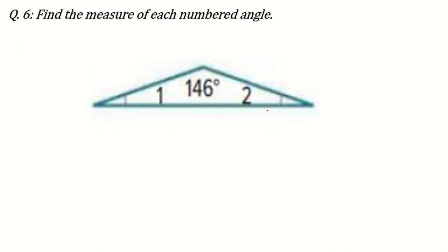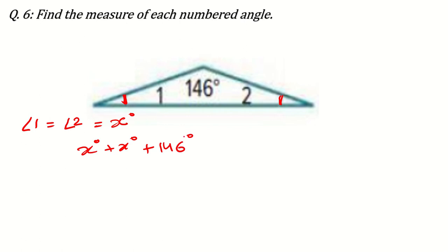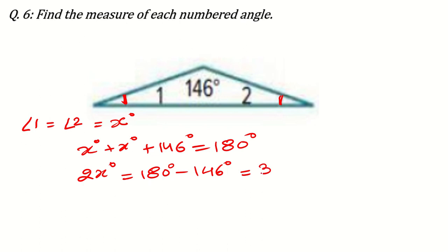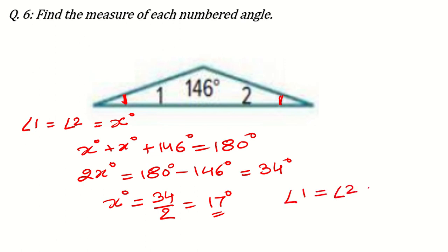The next question: find the measure of each numbered angle. You can see a single line mark and a single arc mark — this means angle 1 equals angle 2. Let's call each x. So 2x plus 146 equals 180 degrees, meaning 2x equals 34 degrees, so x equals 17 degrees. Therefore angle 1 equals 17 degrees.